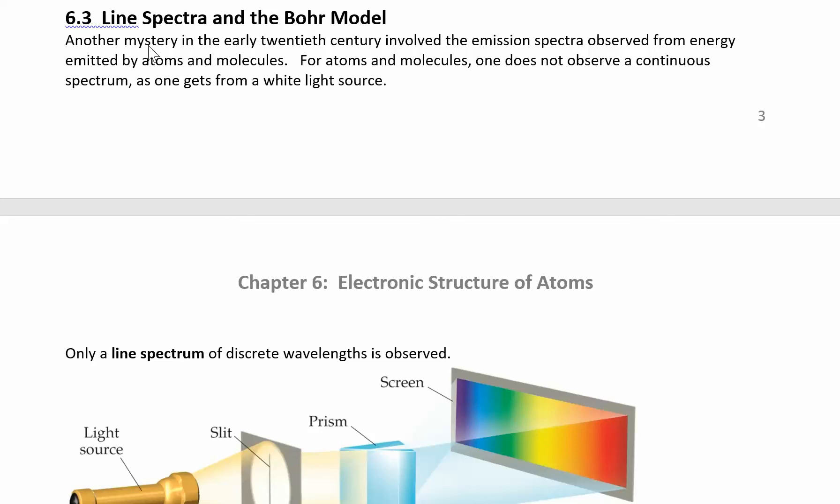Another phenomenon that wasn't really explained very well by classical mechanics was the emission spectrum that you see when energy is emitted by atoms or molecules. You would expect to see a continuous spectrum.